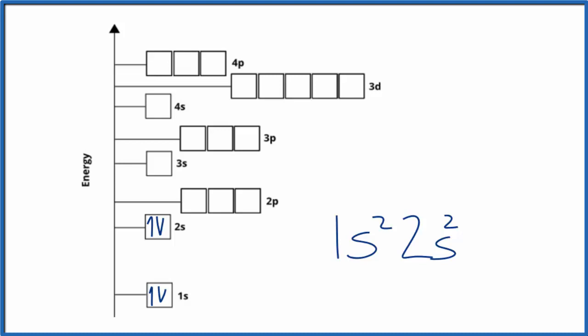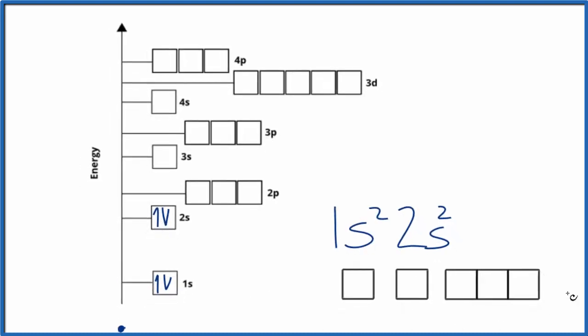Sometimes you'll see it written like this here. So in this case, we have it horizontally as opposed to vertically. We have 1s2 and then 2s2, and we're done. That's the atomic orbital configuration for beryllium in this more horizontal fashion.